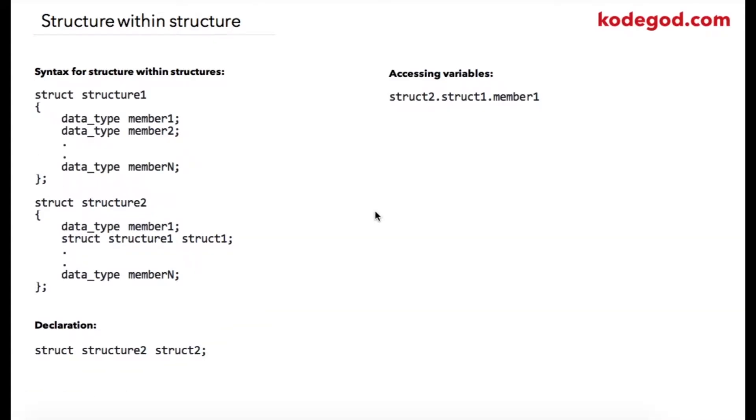In this lecture we are going to learn about structure within structure. What we are going to basically do is use a structure inside of structure. If we assume structure1 and structure2 as two structures, then inside of structure2 I am declaring a variable struct1 of type structure1.